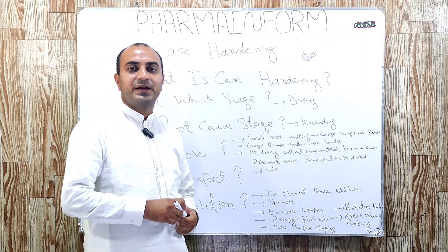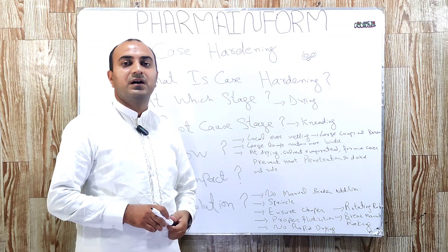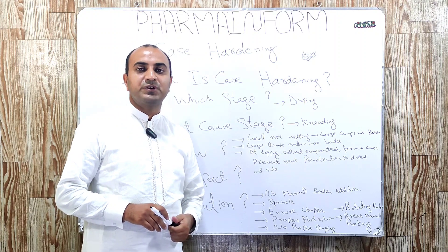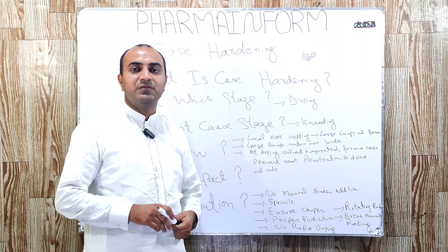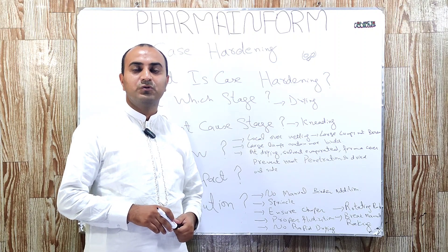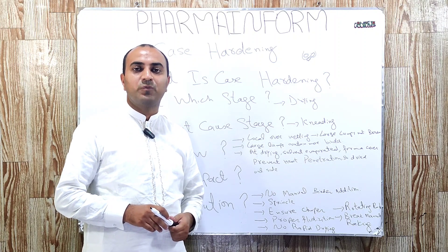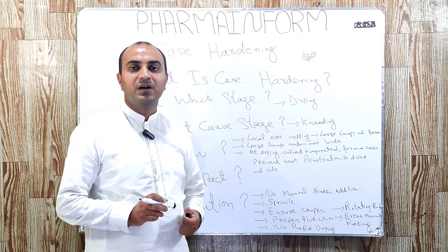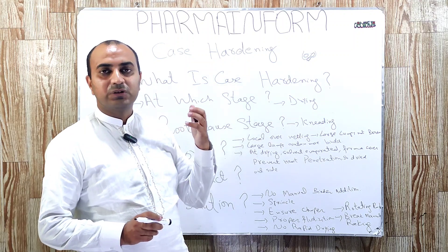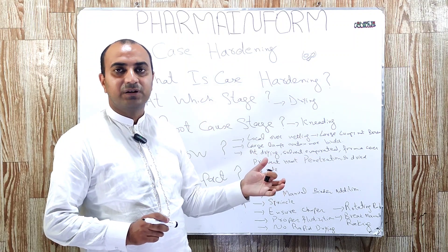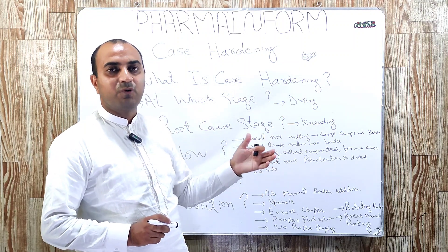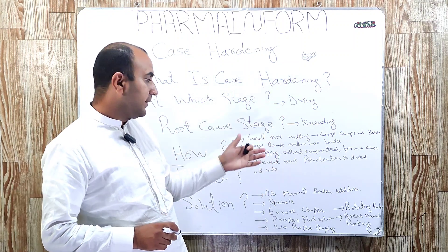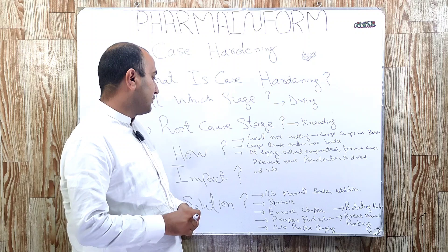The next step is that the chopper speed may be very low. Try to optimize the chopper speed to break down the large lumps which are formed during the kneading process.